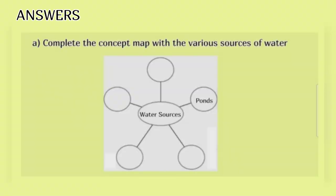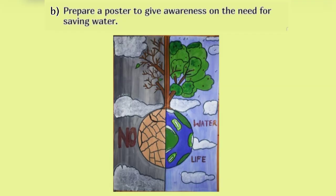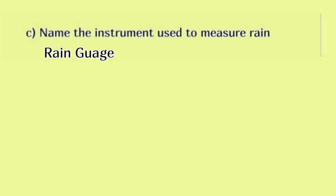Answers. A. Complete the concept map with the various sources of water: ponds, groundwater, river, lakes, rainwater. B. Prepare a poster to give awareness on the need for saving water — you can prepare the poster according to your imagination. C. Name the instrument used to measure rain. Answer: Rain gauge.